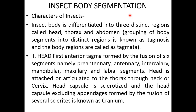The head is embryologically formed by six embryonic segments, thorax with three embryonic segments, and abdomen with 10 to 11 segments. These are the basic fundamental characteristics of insects.